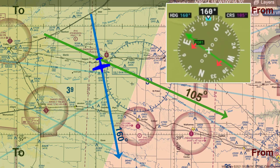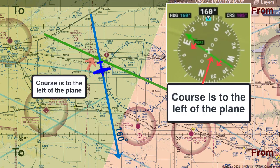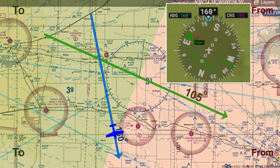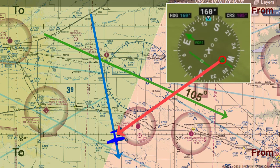Also notice that the D-bar is now moving away to the left of the CDI needle, indicating that the 105 degree radial course is to the left of our location and we are moving further away from it. Now notice the small arrow flips from the to indicator over to the from indicator, showing we have now crossed from the to side of the 105 degree radial to the from side of the 105 degree radial.